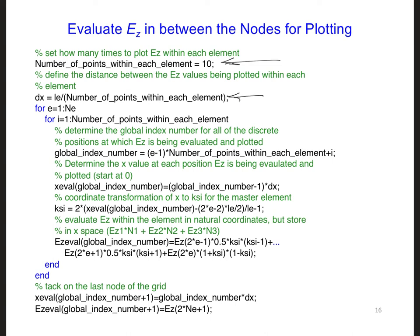And then we'll cycle through each element and each of the 10 points here, since this is set to 10, at which we'll be plotting Ez within each element. This defines the indices at which we're plotting all of the values.